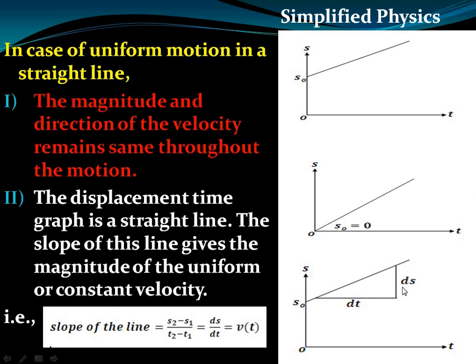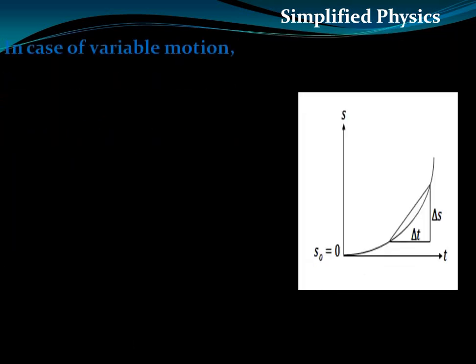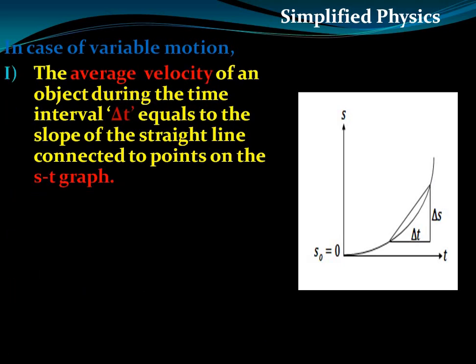In case of variable motion, the displacement-time graph is a curved line. The average velocity of the object during a time interval equals the slope of the line connecting two points on the displacement-time graph. To find the average velocity between two particular points, we join those two points and find the slope of that line — that gives the average velocity in case of variable motion.